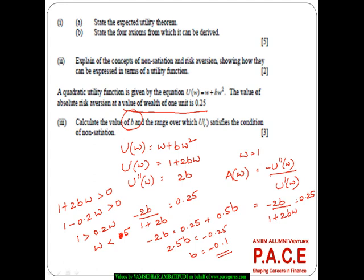So W should be less than 5. So as long as the wealth is less than 5, it is exhibiting a principle of non-satiation. So this is how a typical practical example based on the utility function working out for non-satiation, absolute risk aversion can be worked out. All right.